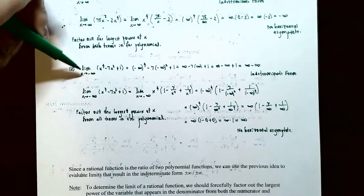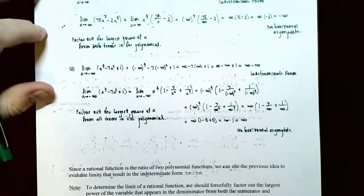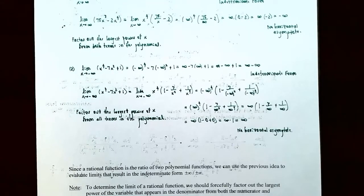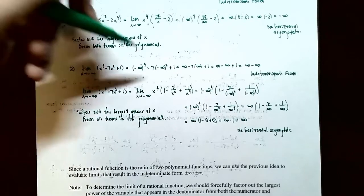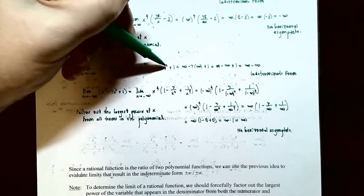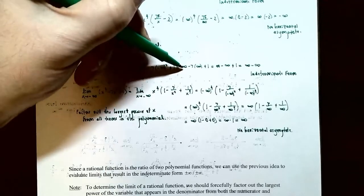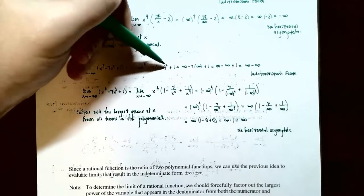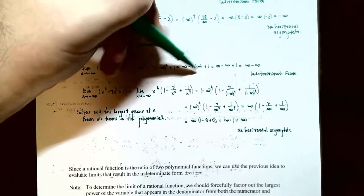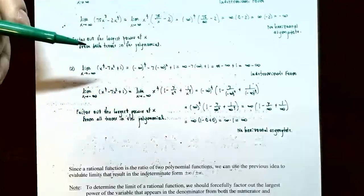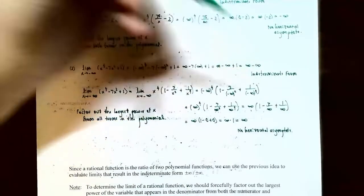Number two: the limit as x approaches negative infinity for x⁴ subtract 7x² plus 1. Let's check for an indeterminate form first. Replacing x with negative infinity: negative infinity to the fourth is positive infinity, negative 7 times negative infinity squared gives positive infinity, so we get infinity minus 7 times infinity plus 1, which yields infinity subtract infinity — an indeterminate form. So we need to factor out the largest power of x in the polynomial.